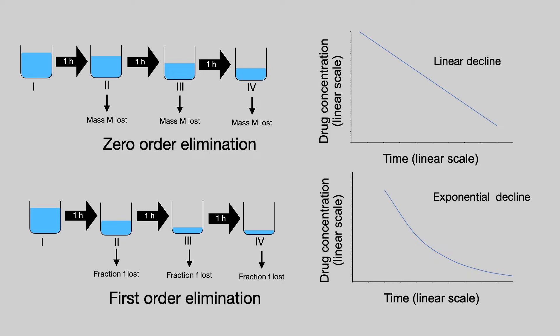Now, we can transform that curve by taking one of the scales, the y-axis, and plotting that on a logarithmic scale. This is a semi-log plot. So first order elimination on a semi-log plot gives you a straight line.